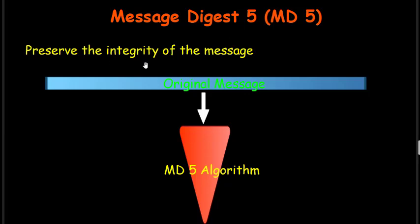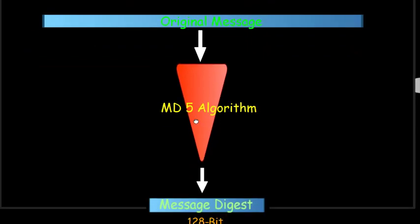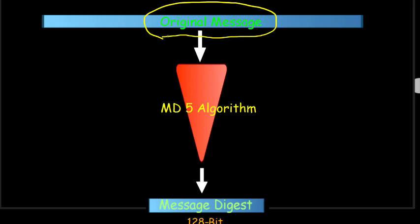Integrity means that if there is any change in the message, the receiver must know that a change has occurred. This is the block diagram of the MD5 algorithm. The original message can be of any number of bits — it may be a hundred thousand or ten thousand bits long. This original message is passed through the MD5 algorithm and we get a message digest. The message digest created by MD5 is always 128 bits, irrespective of the size of the original message.